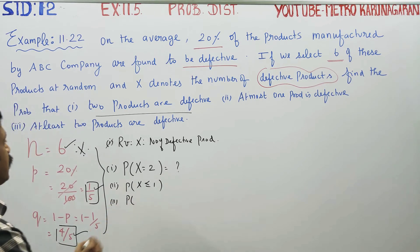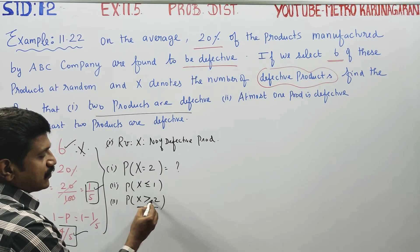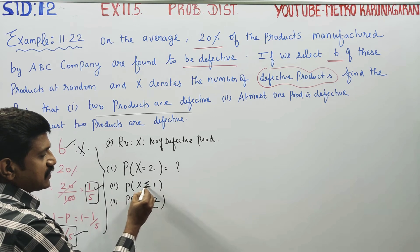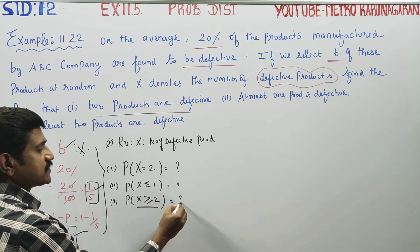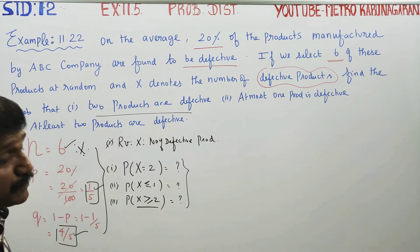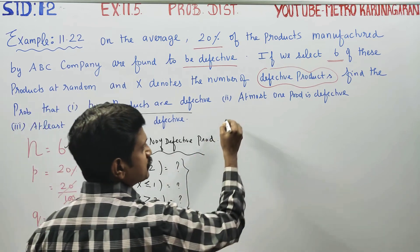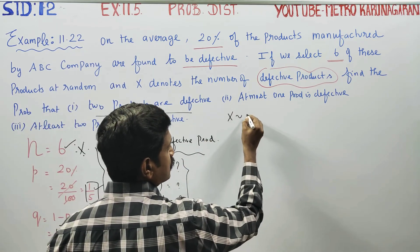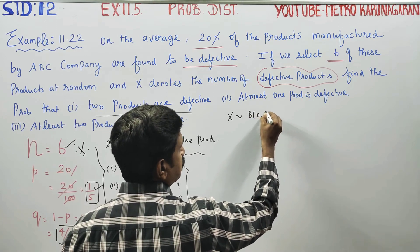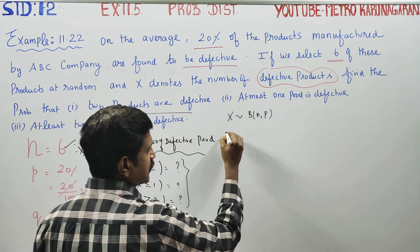Third sum is probability of at least two products, X is greater than or equal to 2. At least, in general symbol, is greater than or equal to 2. At most, in general, is less than or equal to 1. Before entering into the sum, N, P, Q are in the sum — X follows binomial distribution. This probability is called binomial distribution with parameters n and p.